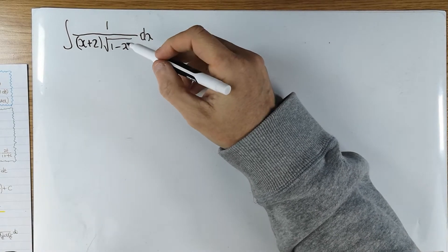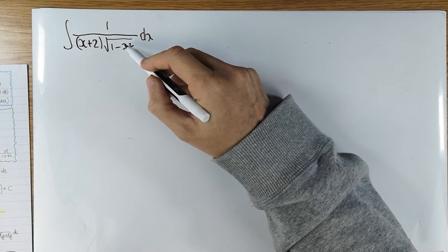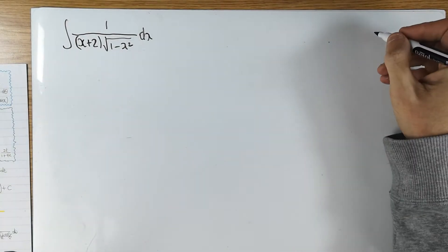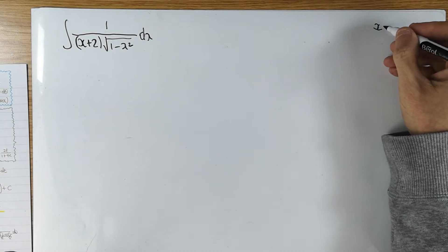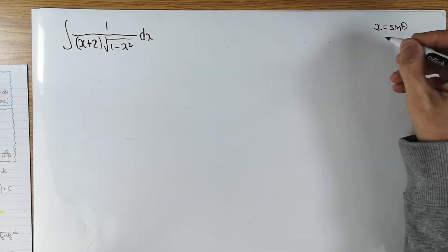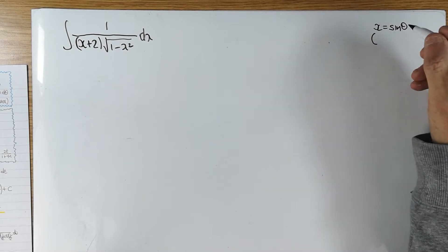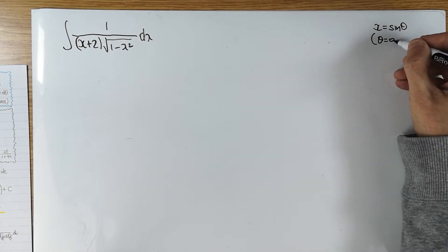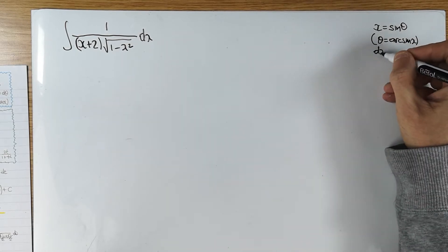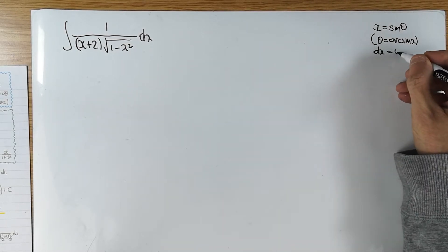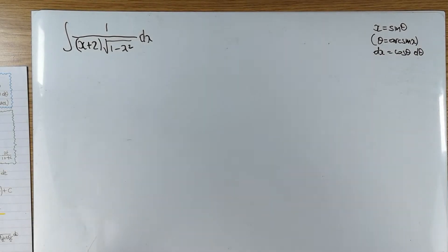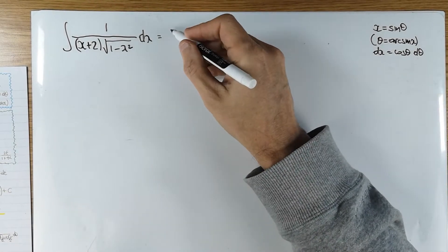The first and obvious thing for something like that is to try a substitution — maybe a trigonometric substitution with this particular quantity. So I'm going to go for a sine or a cosine. Let's go for sine: x equals sine of theta. In fact, the substitution is theta equals arcsin of x. Differentiating quickly: dx equals cos θ dθ. Let's go into our integral and see how this transforms.